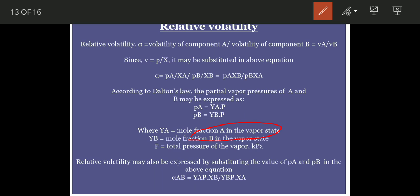When working in the vapor state, we denote the mole fraction of a component as y. When the component is not in the vapor phase, we denote its mole fraction as x. P represents the total pressure of the vapor. Using these substitutions, relative volatility may be expressed by substituting the values of Pa and Pb into the above equation.